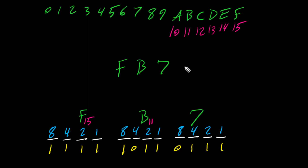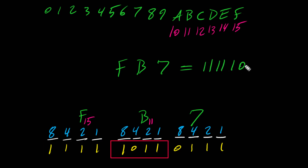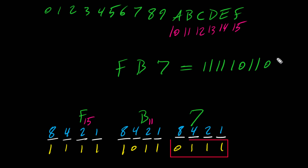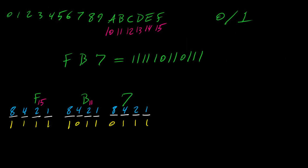So the binary for FB7 is: F gives 1 1 1 1, B gives 1 0 1 1, and 7 gives 0 1 1 1. Therefore, hexadecimal FB7 is equivalent to binary 1111 1011 0111.